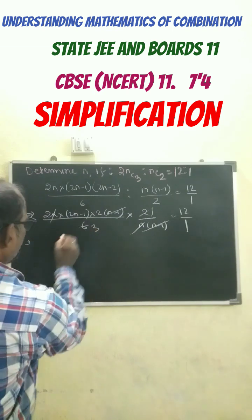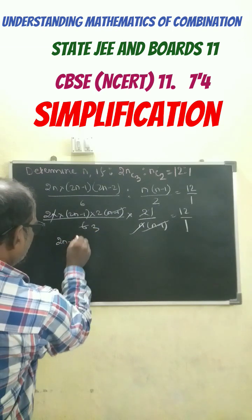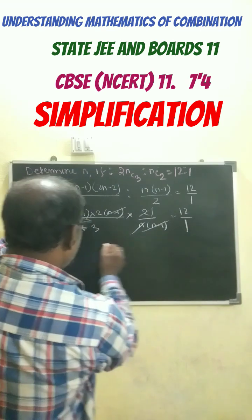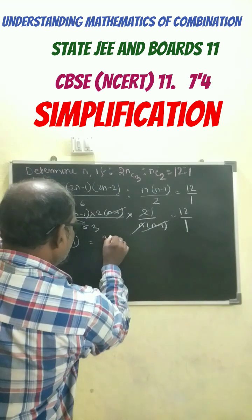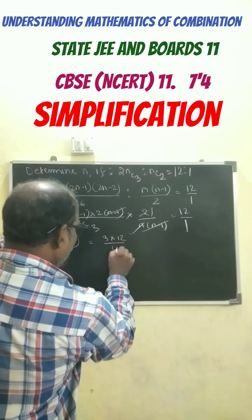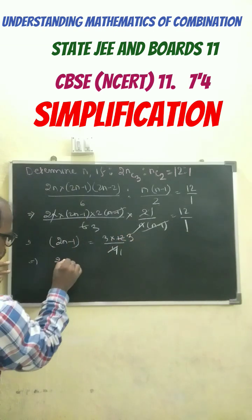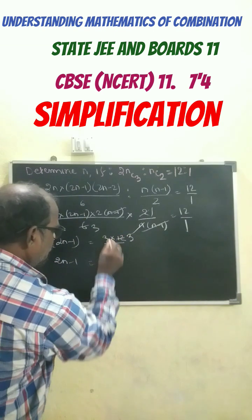So finally we get here 2n-1. This 2 into 2, 4 comes over here. We get here 3 into 12 by 4. 4 ones are 4, 4 threes are 12. So this gives 2n-1 equals to 3 to 3, 9.